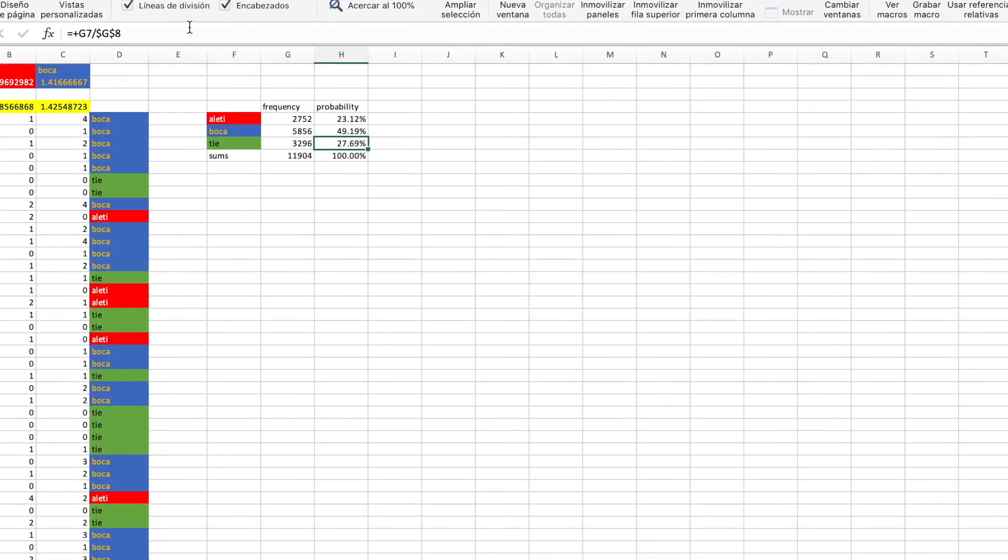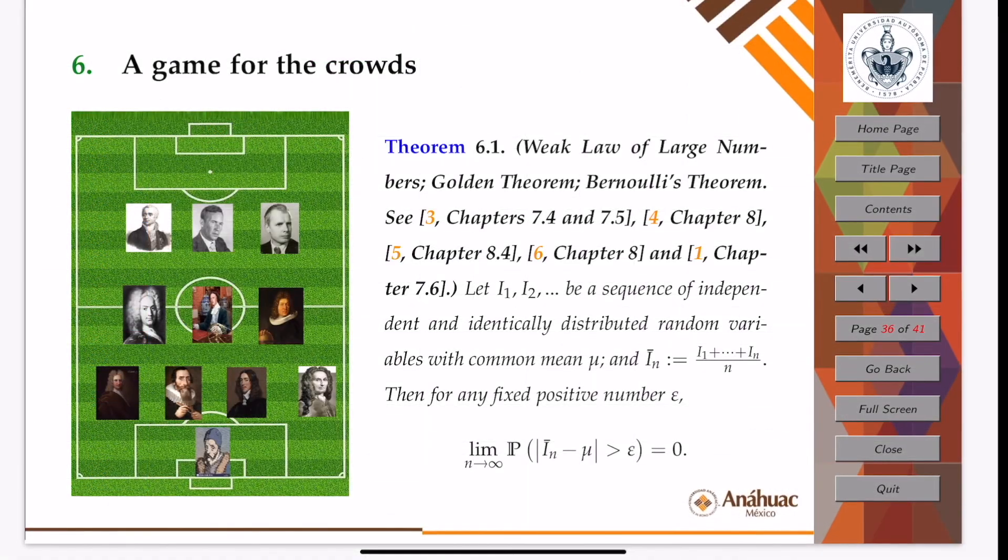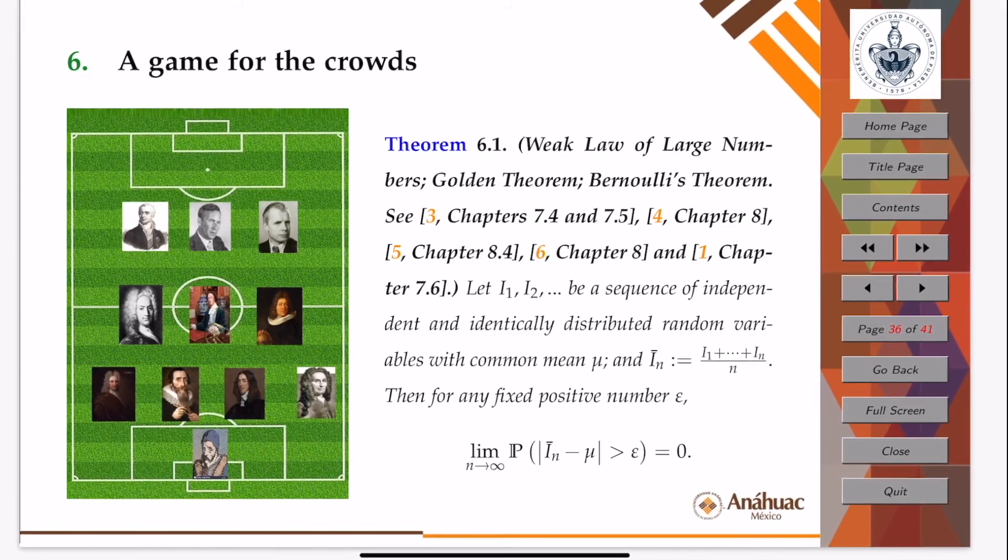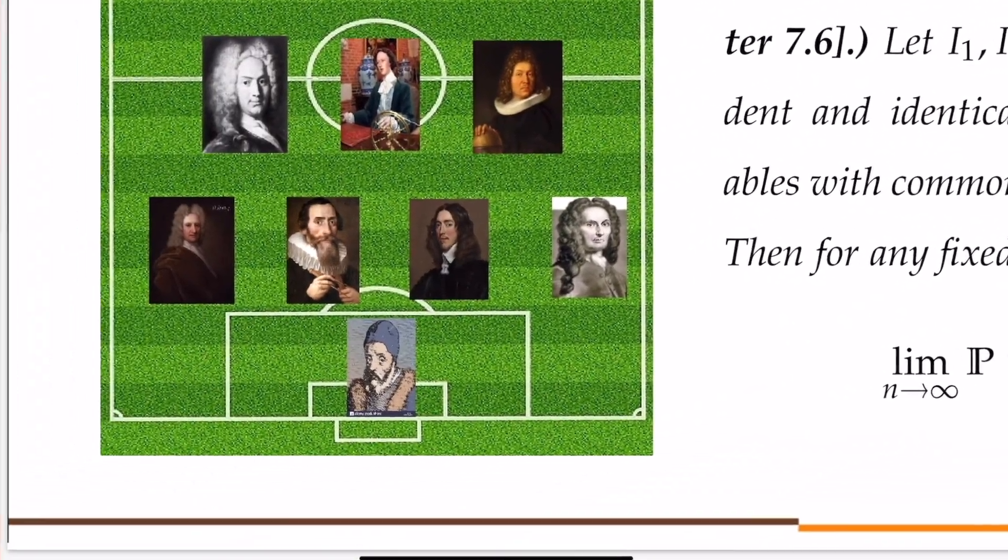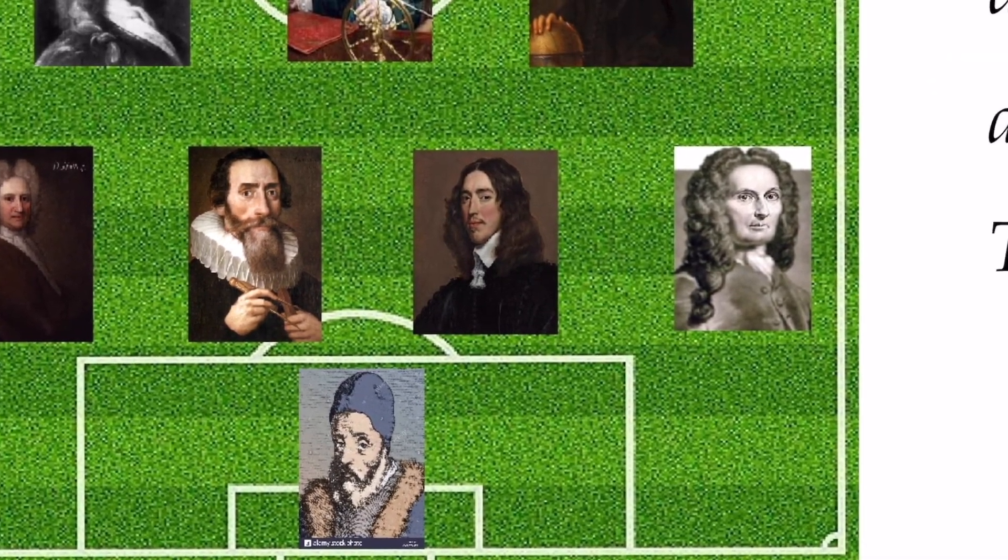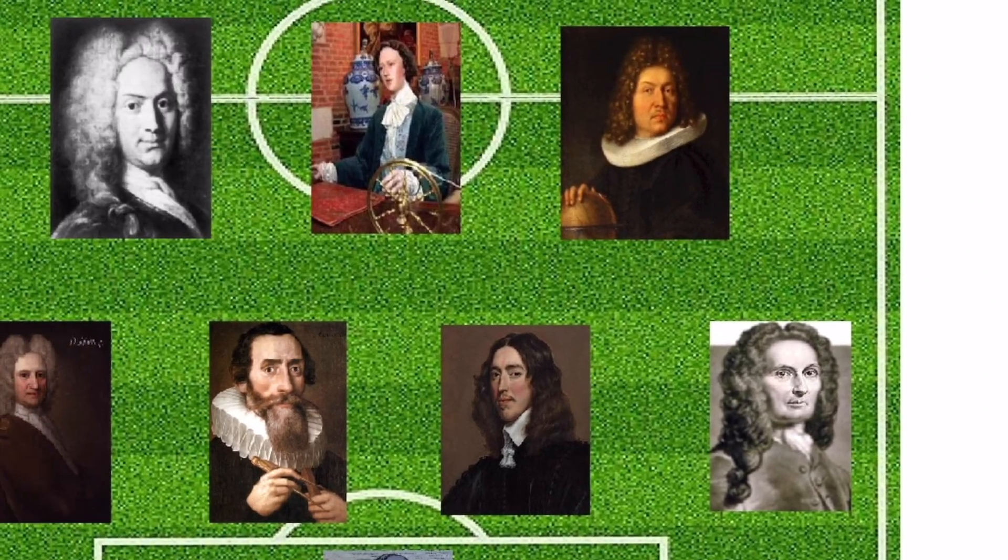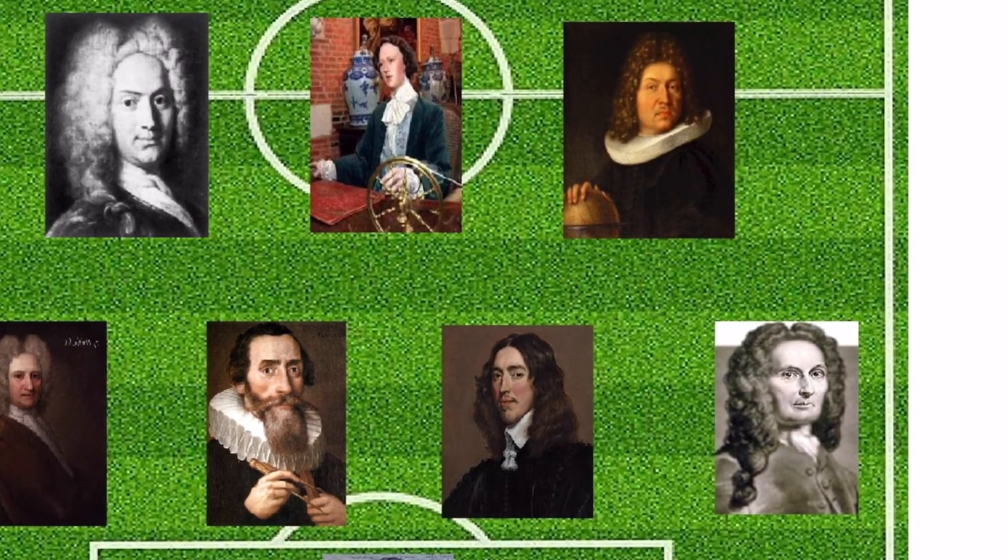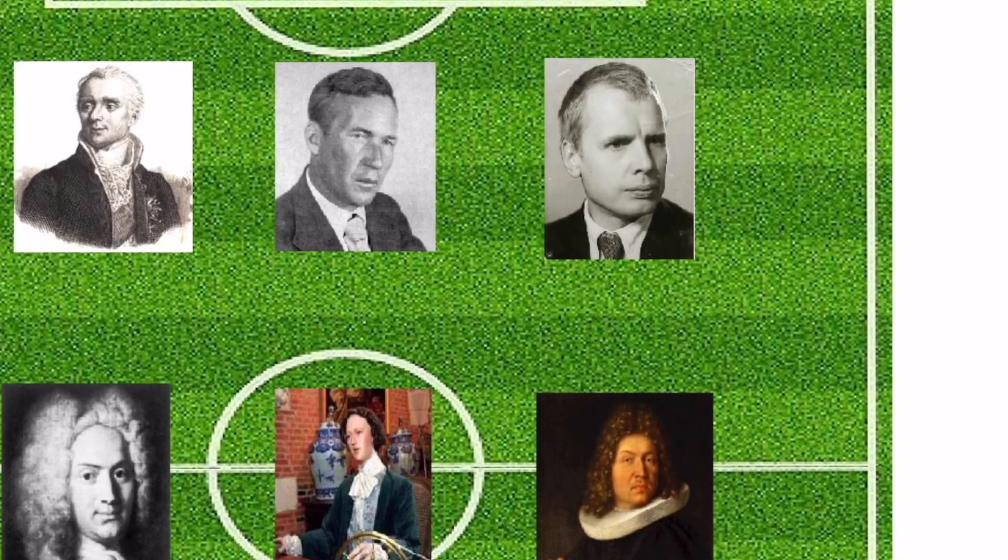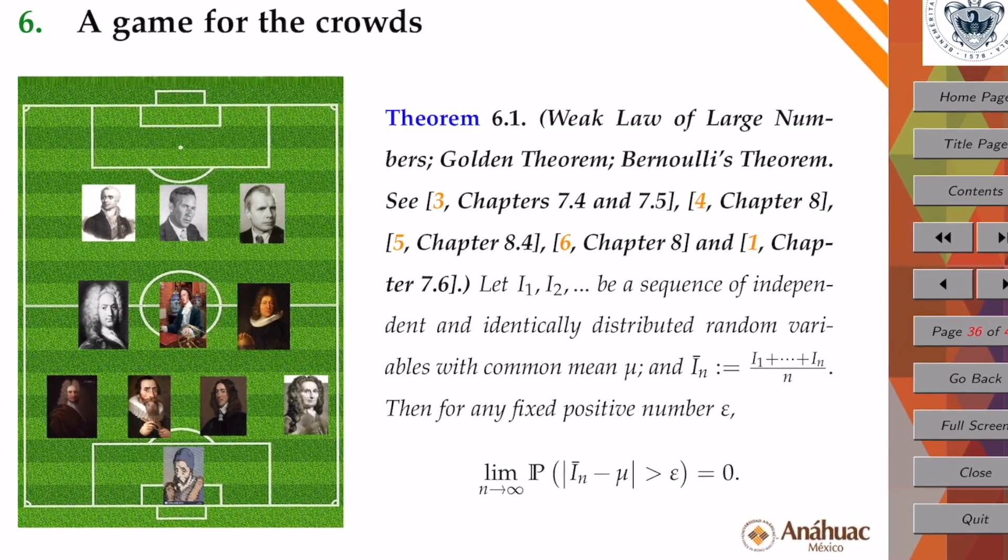The idea of taking averages of really large samples traces back to the times of Cardano, Halley, Kepler, De Witt, De Moivre, the Bernoulli brothers, Montmort, Laplace, and finally Kolmogorov-Khinchin, and it's called the weak law of large numbers.